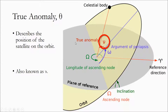Finally, we have the true anomaly, theta, and it describes the position of the satellite on the orbit. The celestial body — which could be a satellite, a spacecraft, a person, whatever — and the true anomaly is just the angle from the periaps to the current position. Let's switch over to KSP, where Bill, Bob, Jeb, and Valentina are in orbit in different orbits to demonstrate some of these concepts.